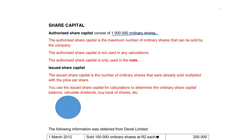This authorized share capital is never used in calculations. The only place that you will ever use your authorized share capital is in the note for share capital that will accompany the balance sheet. Issued share capital is the number of ordinary shares that was already issued, and you multiply that number with the price per share — the price at which you sold the shares originally.